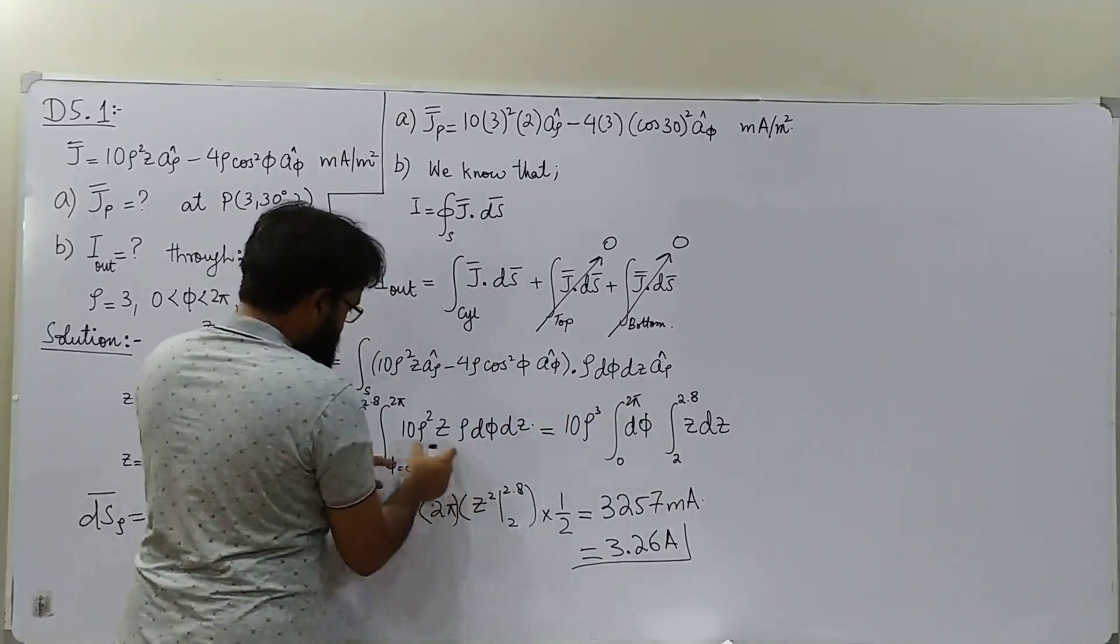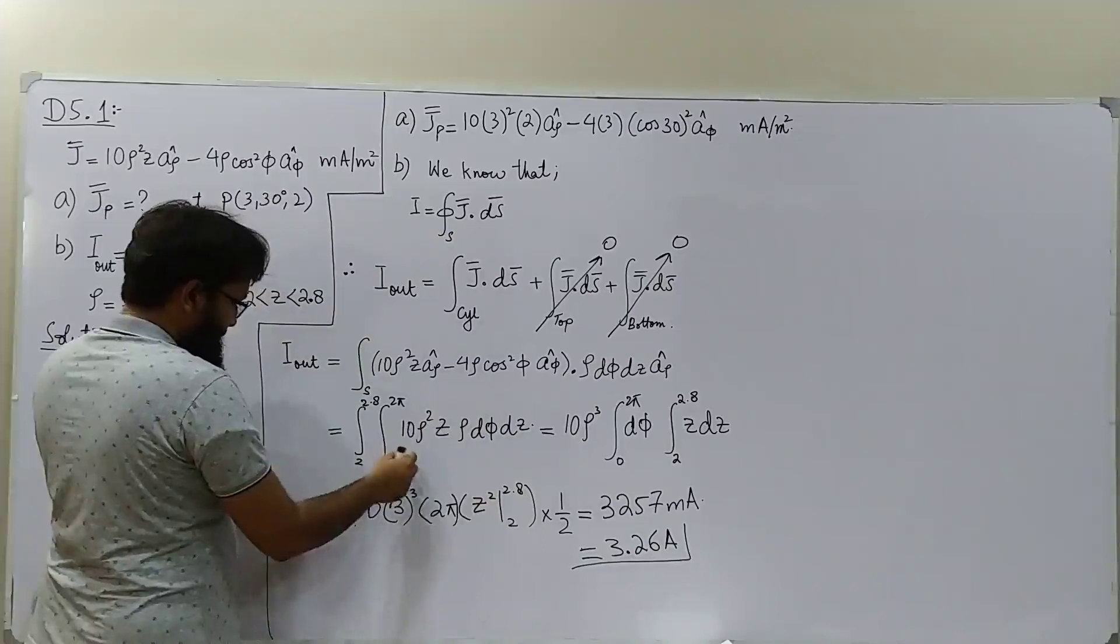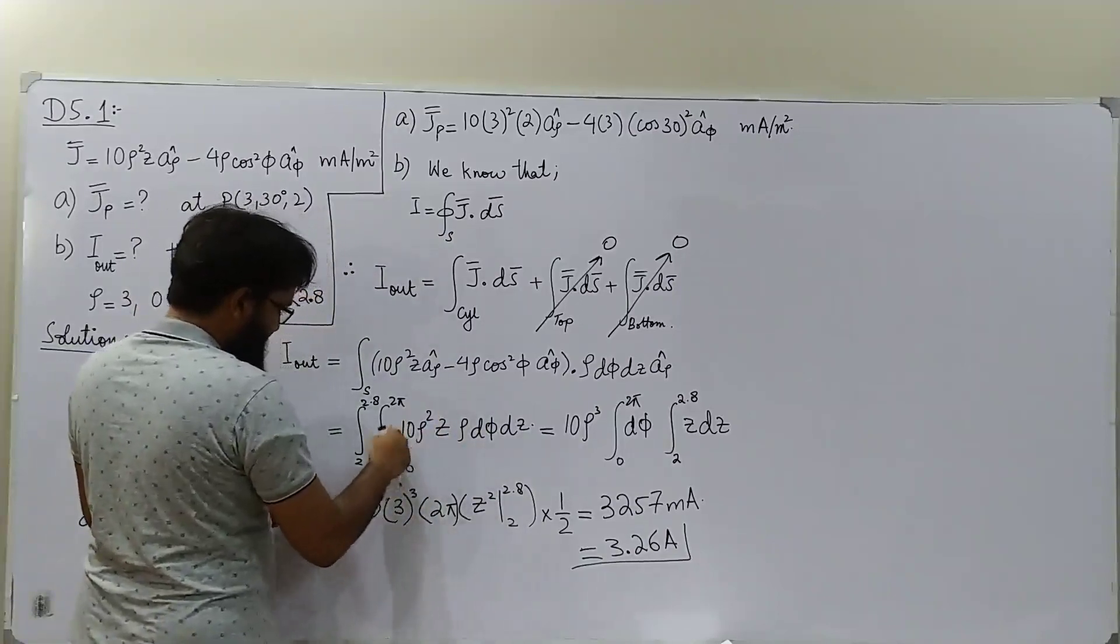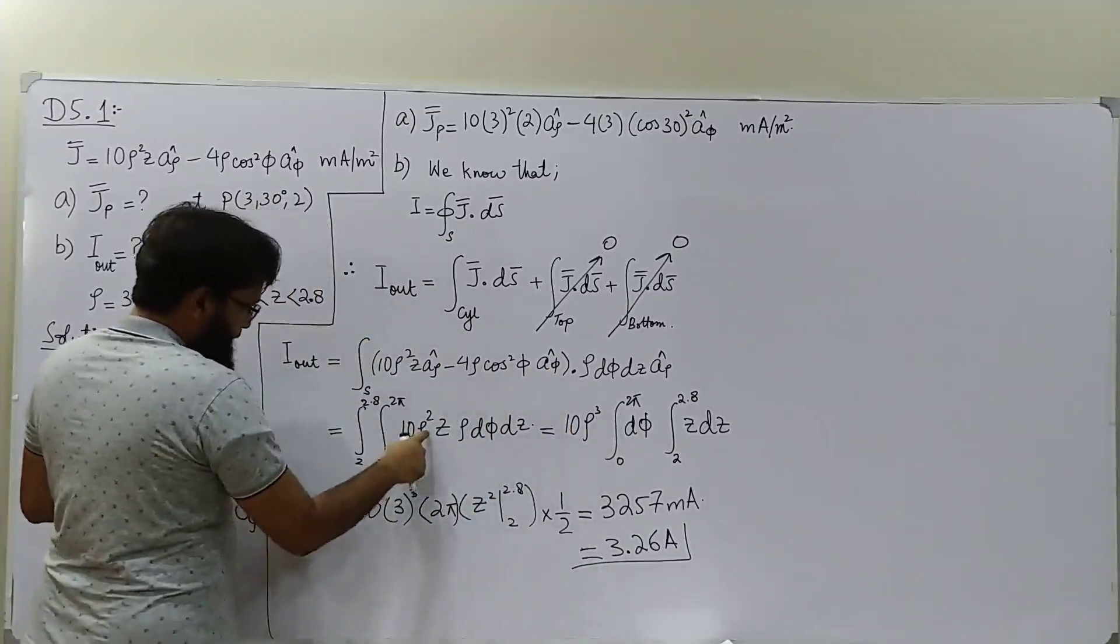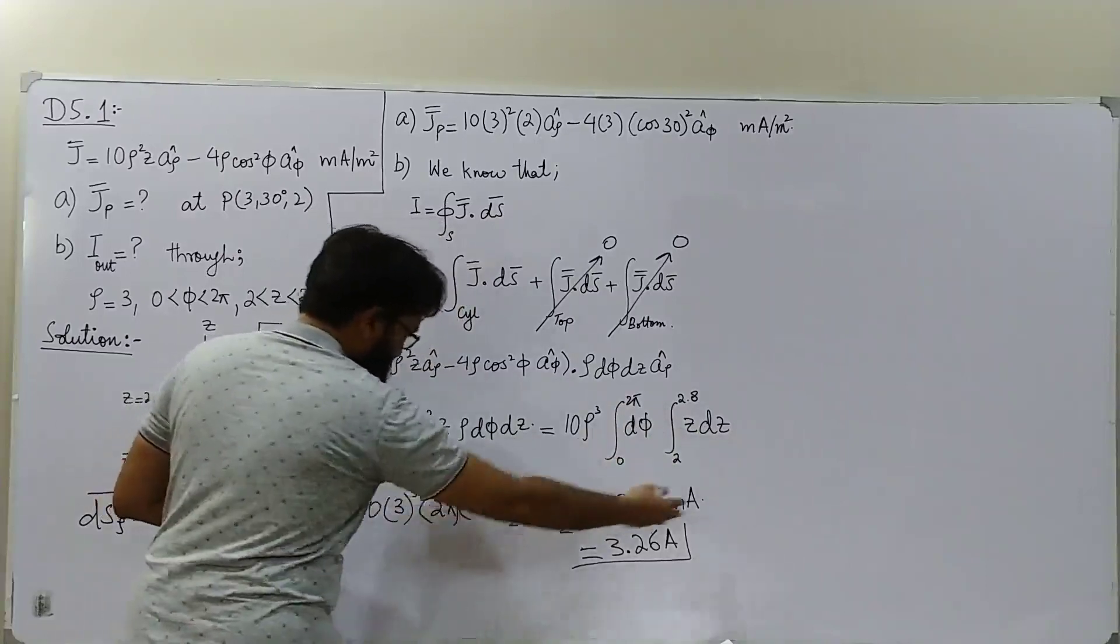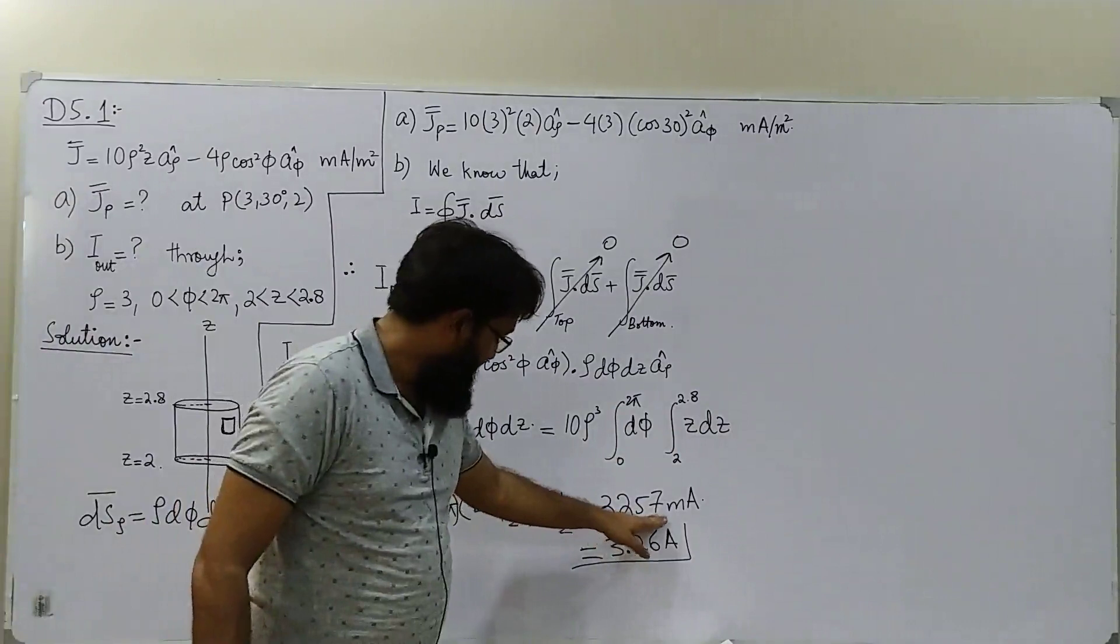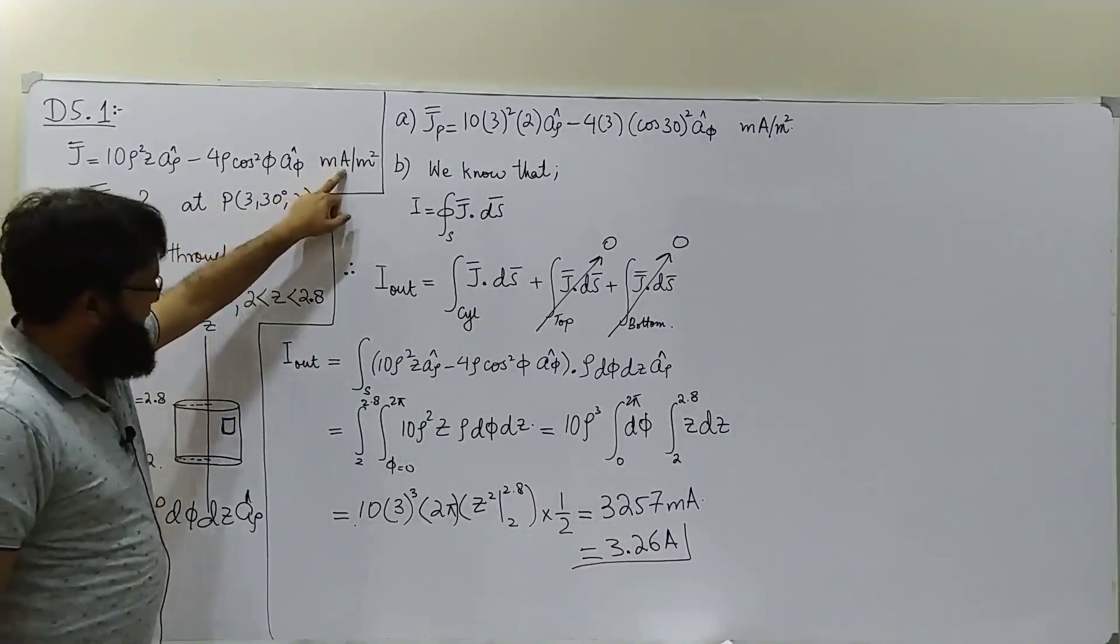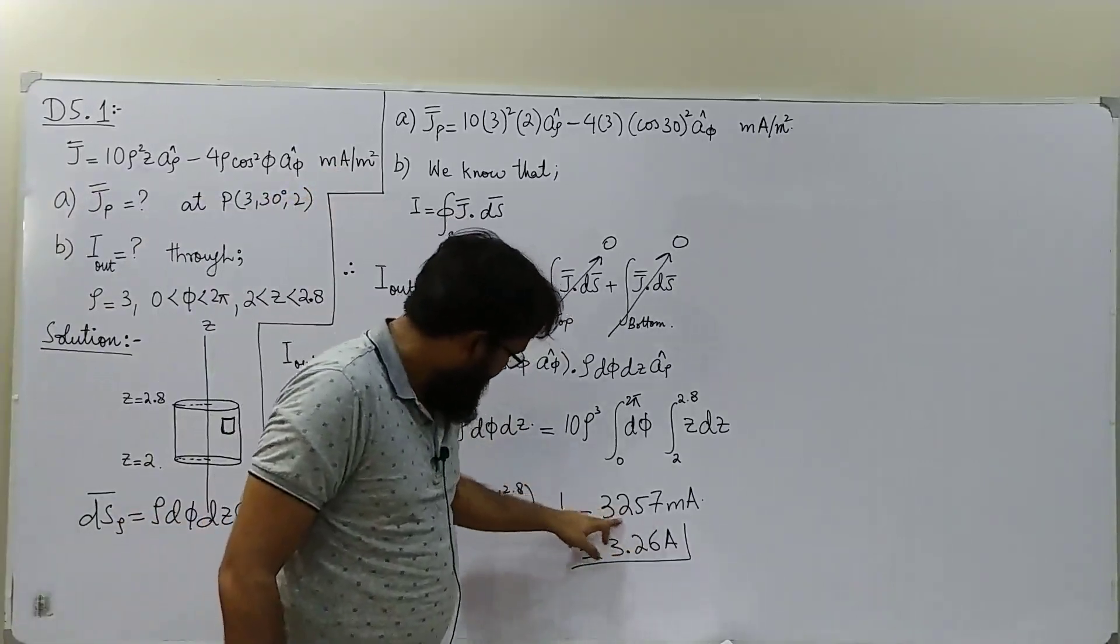Just do the necessary maths. Variables for integrations are φ and z, so all the other entities like ρ and this 10 are constant, can be taken out of the integral sign. ρ squared into ρ is ρ cubed. Just take the integration, do the maths, and you are going to get this big number. But remember, if you forget that this is in milliampere, you may fall in a pit and write amperes here. 13,000 ampere is a huge current.